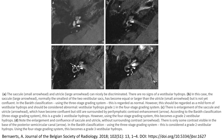In image C, there is enlargement of the saccule and utricle, arrowhead indicated, which have become confluent but are still surrounded by perilymphatic contrast-enhanced signal, arrow indicated. According to the Gibson classification using the two-state grading system, this is grade 1 vestibular hydrops. Using the older grading system, this becomes grade 2 vestibular hydrops.